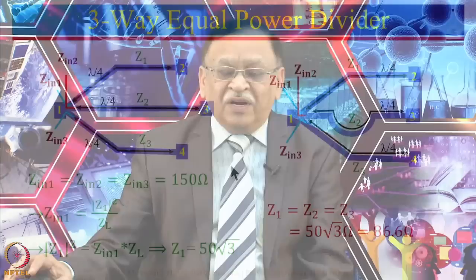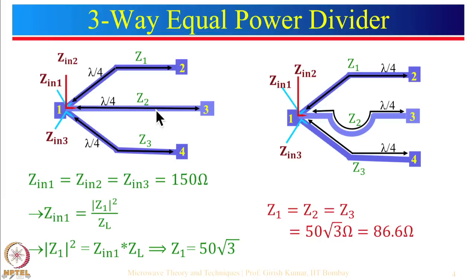Again this is not a good power combiner. Now suppose if we had not used quarter-wave transformers — if ports 2, 3, 4 were connected directly without a quarter-wave transformer, the three 50-ohm loads in parallel would give 50/3 = 16.67 ohm at the input port, which is not matched and a lot of power would reflect back. So it is essential to choose the impedance values carefully to design a proper equal power divider.